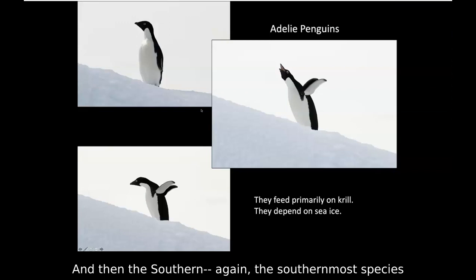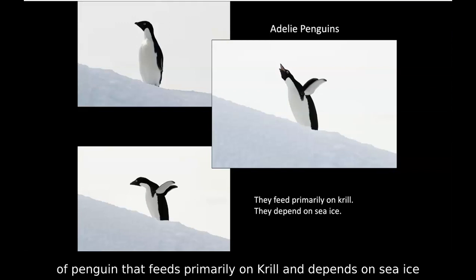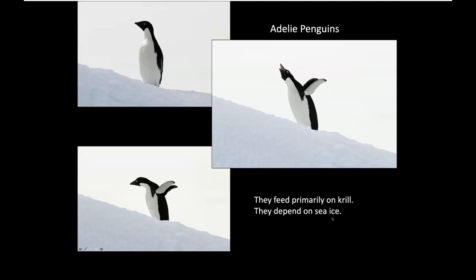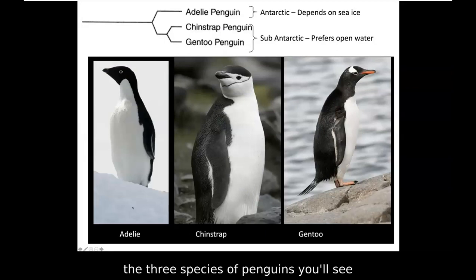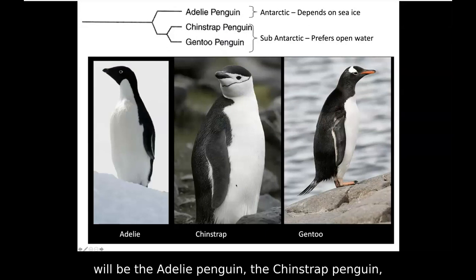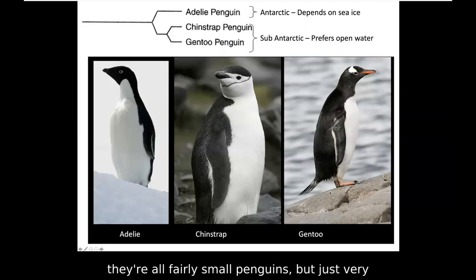The Adélie penguin — the southernmost species, which feeds primarily on krill and depends on sea ice — is the most ice-dependent of the three species. To summarize, the three species of penguins you'll see on the Antarctic Peninsula are the Adélie, the chinstrap, and the Gentoo — all fairly small penguins but very interesting and beautiful animals.